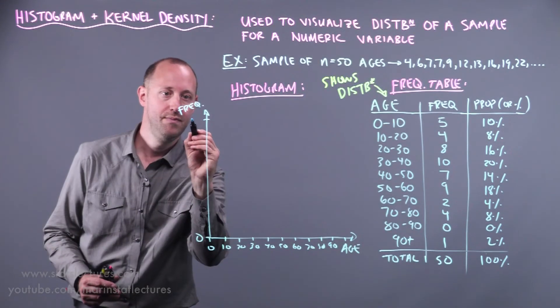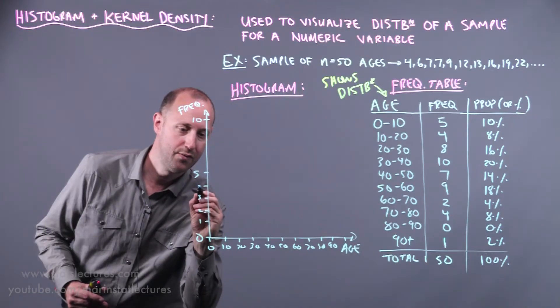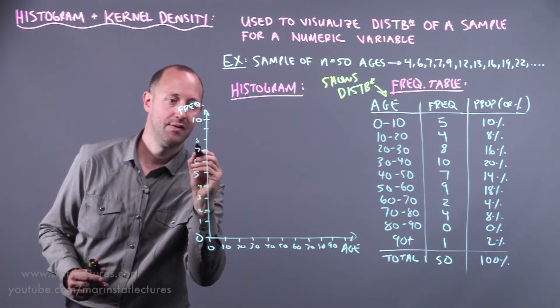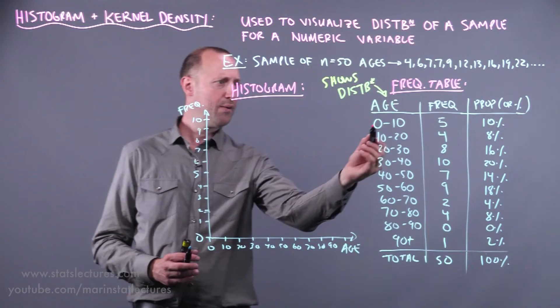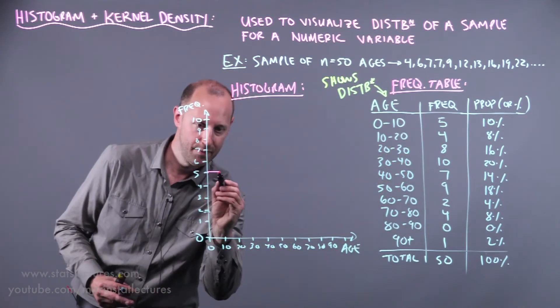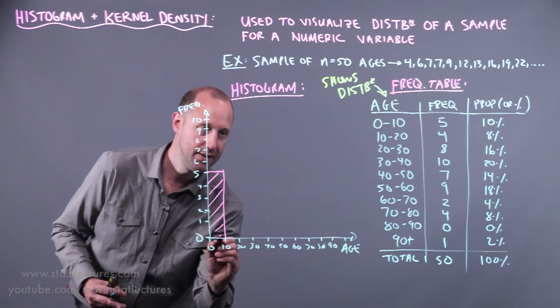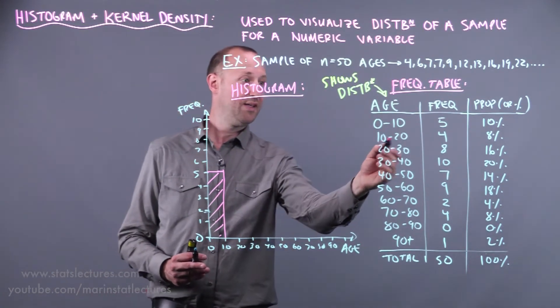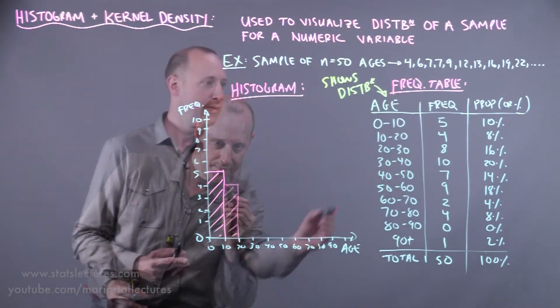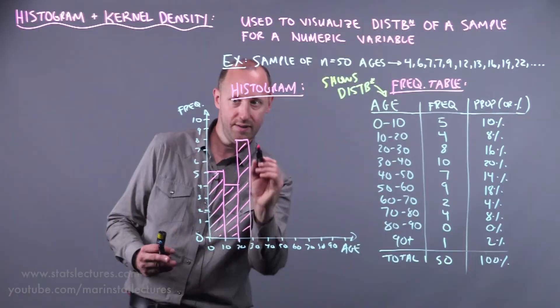Down here is 0 up to 10. 1, 2, 3, 4, 6, 7, 8, 9. Now we can see in the 0 to 10 bin we have 5 people. So I'll shade that in here. In the 10 to 20 we have 4. 20 to 30 we've got 8. 30 to 40 we've got 10.